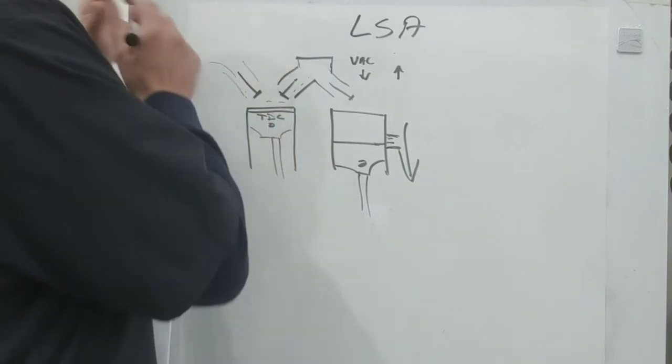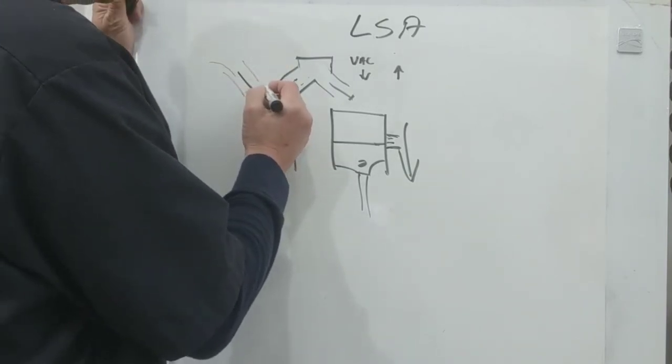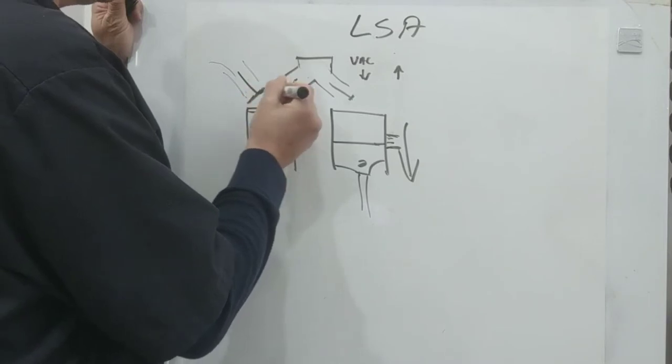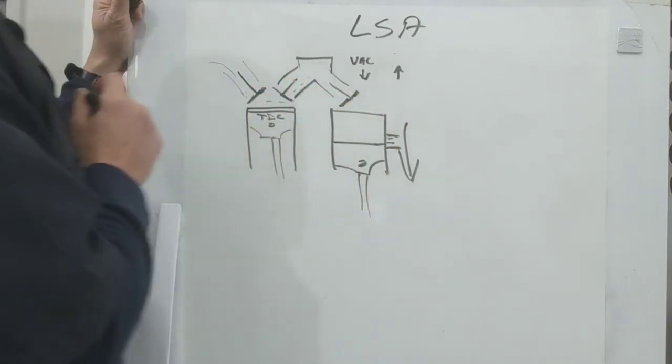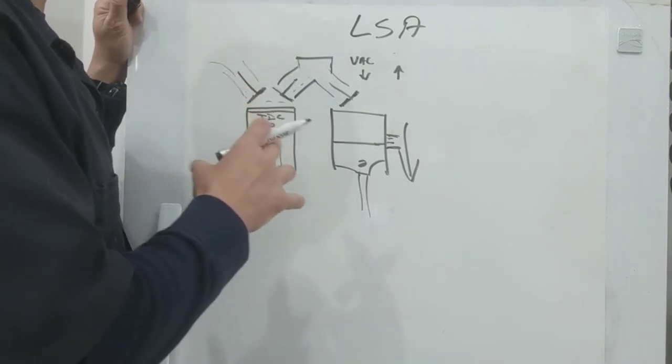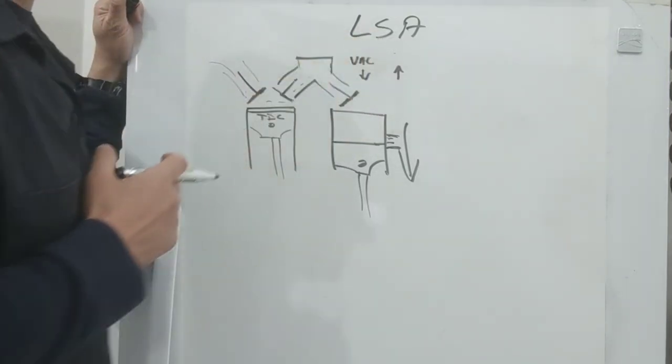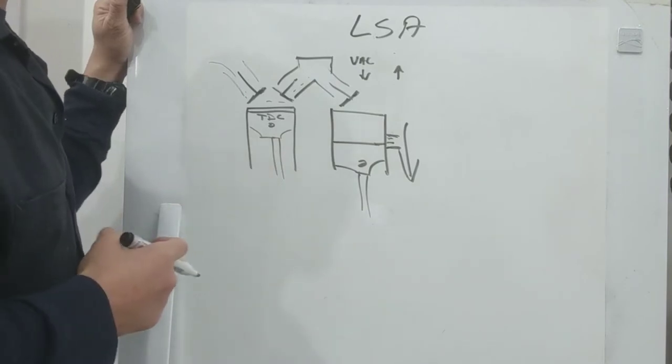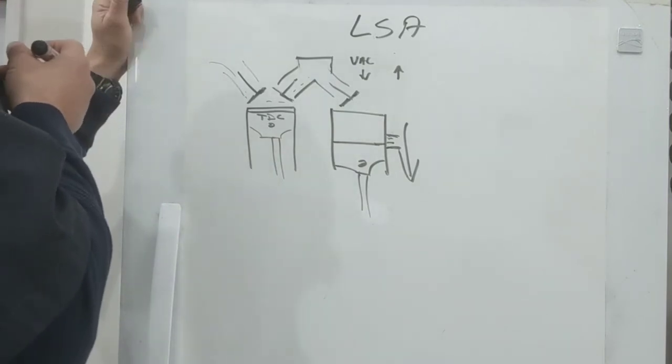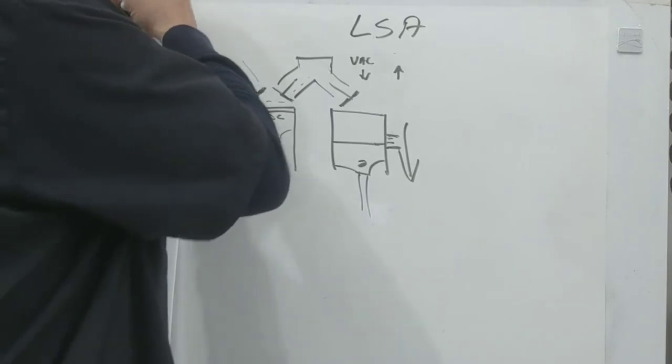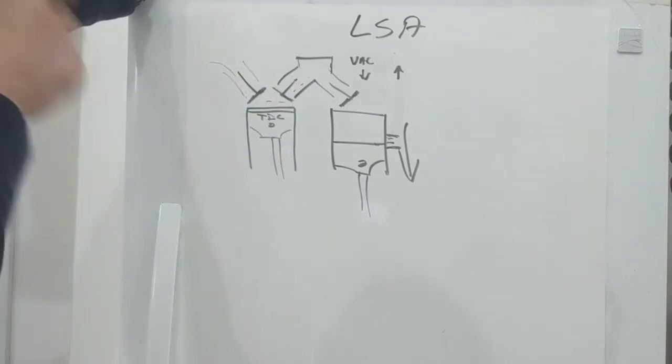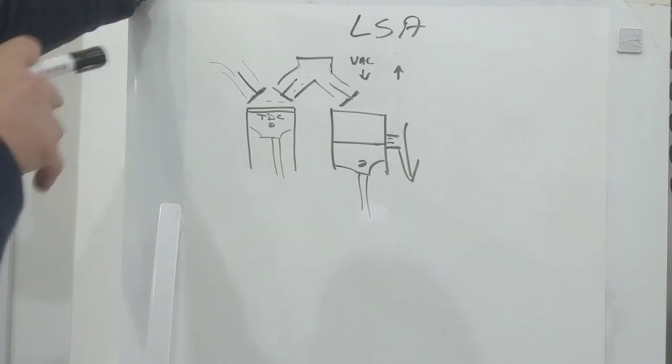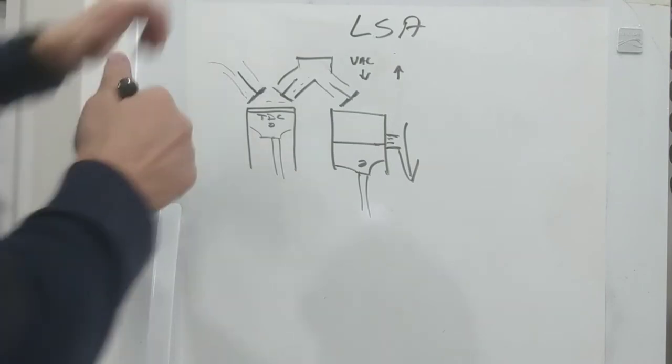If you have small valves, you're going to need a tighter lobe separation angle to get the most torque out of that engine. If you have bigger valves - the valves are huge - it flows a lot more, so your lobe separation gets wider.